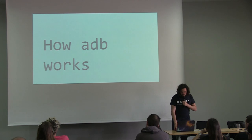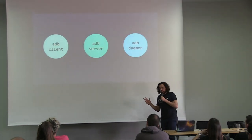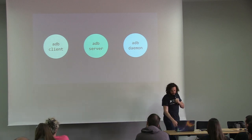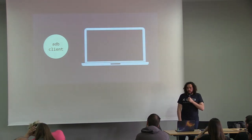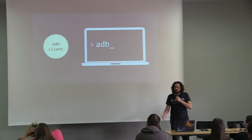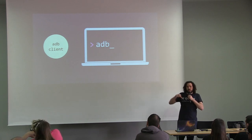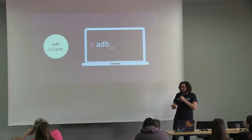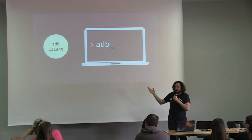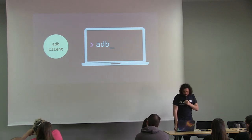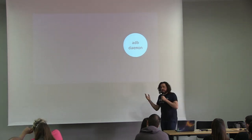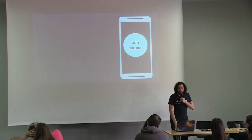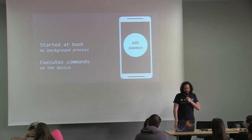How ADB is working: you have three elements — the trinity of ADB. You have the ADB client, the ADB server, and the ADB daemon. The ADB client is the command line that you are running when you type ADB. When you do that, you are instantiating the ADB client. On the other side, you have the ADB daemon running on your devices — every Android device is running an ADB daemon. It's a background process that is started at boot of the system.